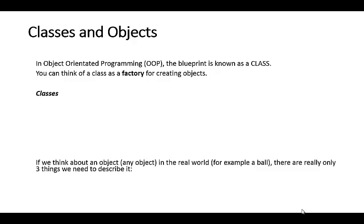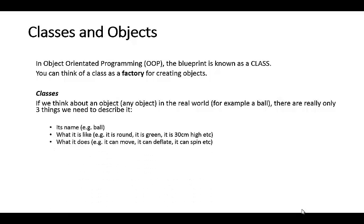So if you think about why we create a class, any object in the real world, there's only really three different things we need to describe it. The first thing would be its name. The second thing would be what it's like. So for example, if we were trying to describe a ball, we'd say that it's round, it might be green, it might be 30 centimeters high, etc. And the other thing that we might want to describe is what it can do. Can it move, can it deflate, can it spin?